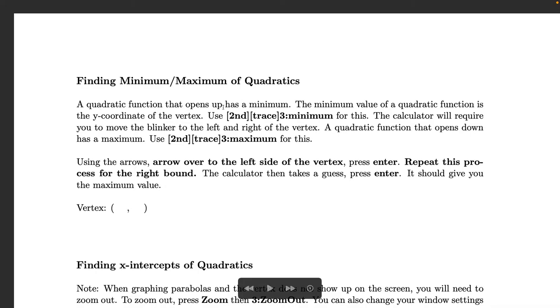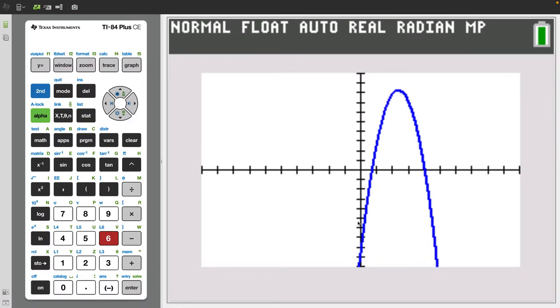Now a function that opens up is going to have a minimum. We've discussed this before in past sections. The minimum value can be found by using second then trace and then clicking the number three for a minimum. So because our parabola or quadratic opened downwards this is going to be a maximum. The procedure is still the same.